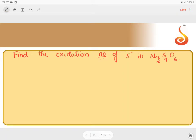Hello everyone, now let us learn one more example: finding the oxidation number of sulfur in Na₂S₄O₆. Using the normal method for Na₂S₄O₆, whatever we are finding is an average oxidation number because we have four sulfur atoms.